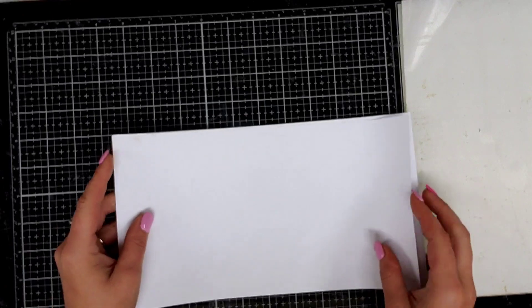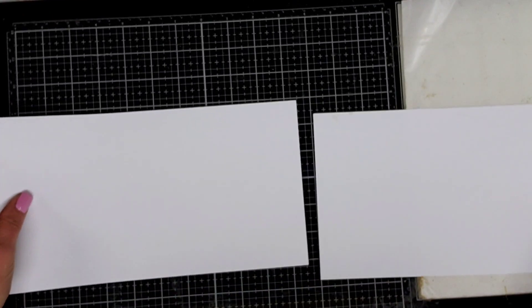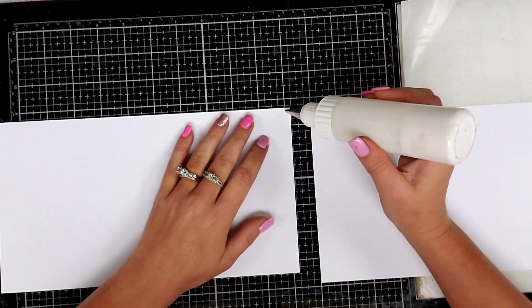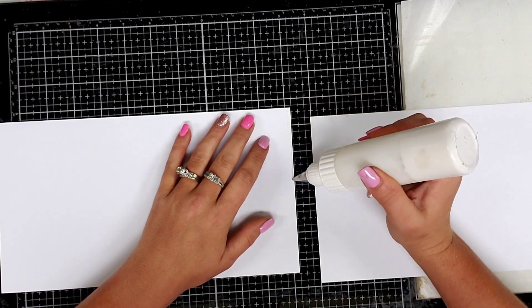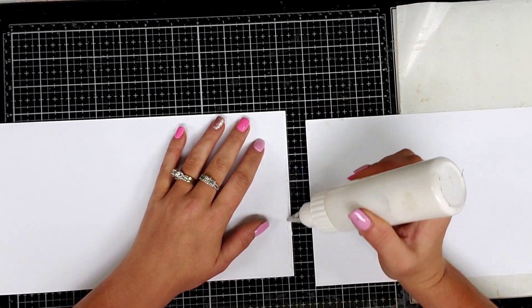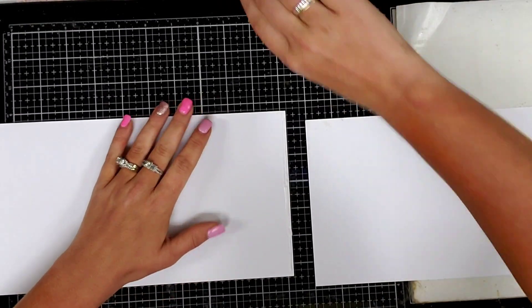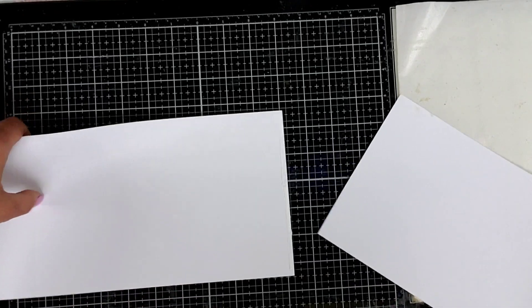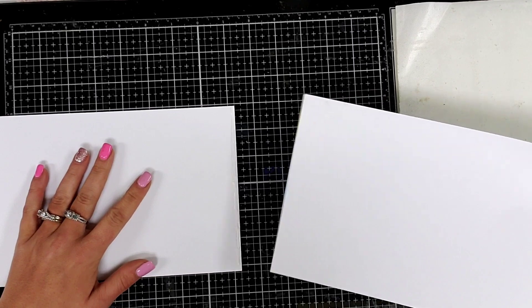So when you cut them, you should have two pieces of paper that look like this. Next what you're going to do is glue the two pieces of paper together. You want to make sure that you glue it straight, because if you don't, your journal will be wonky.